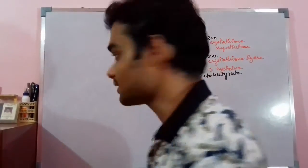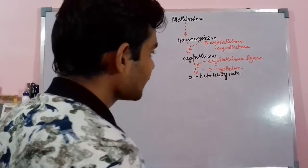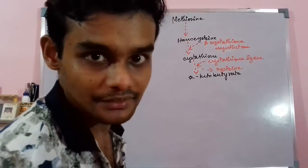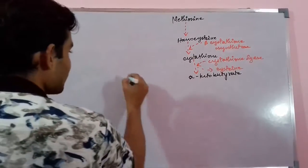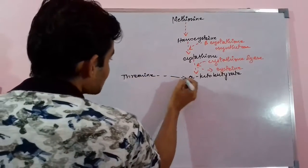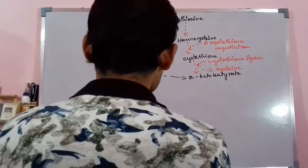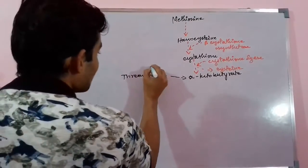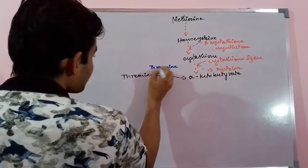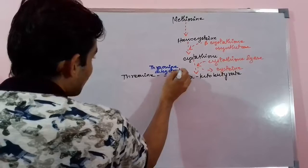This alpha-ketobutyrate is an organic hydrocarbon compound totally different from amine-containing compounds like amino acids. Alpha-ketobutyrate is also liberated by the threonine amino acid, which gives rise to alpha-ketobutyrate in the presence of the enzyme threonine dehydratase.